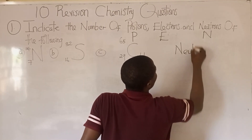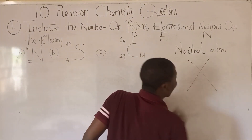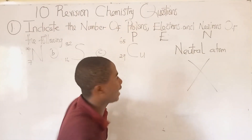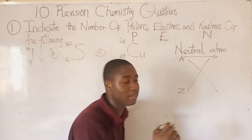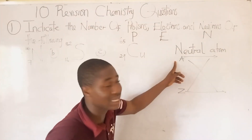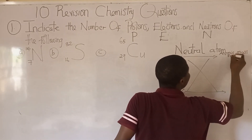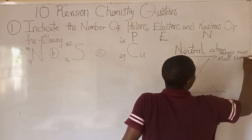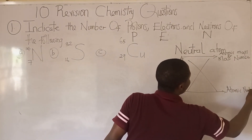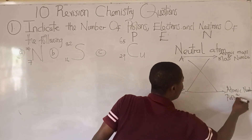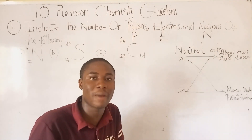So how do we determine the numbers of protons, electrons, and neutrons for a neutral atom? Let's take an example — this is X, an unknown atom. Here is labeled as A, and here is labeled as Z. The place labeled A has a name and the place labeled Z has a name. Z is simply called the atomic number, which I will also call the proton number, because we are trying to find the proton number, electron number, and neutron number for a neutral atom.